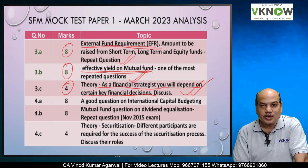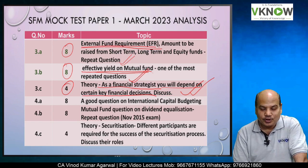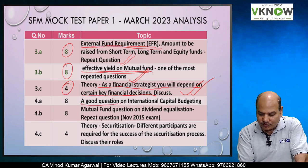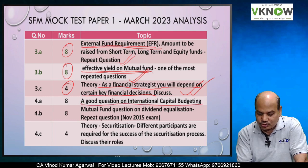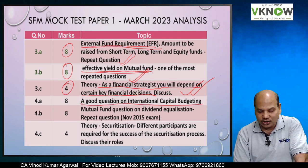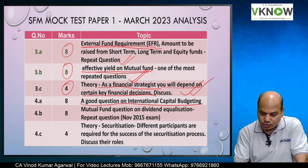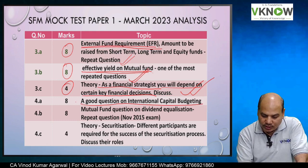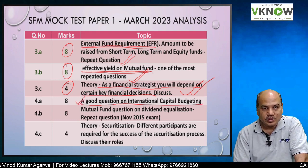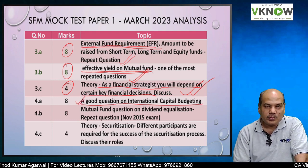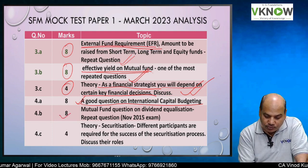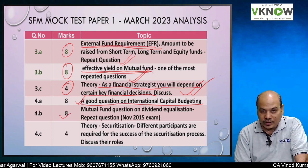Question 4A was for 8 marks and was a very good question on international capital budgeting. If you have attended the international capital budgeting chapter in detail, you will be able to solve it.